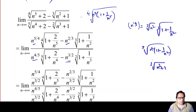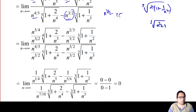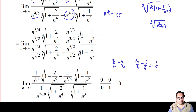Now, let us take the highest power of n in the denominator. The highest power is n^(3/2), since 3/2 = 1.5, while 4/5 is less than 1. We divide both numerator and denominator by n^(3/2). So n^(5/4) divided by n^(3/2) gives n^(5/4 - 3/2) = n^(5/4 - 6/4) = n^(-1/4), which is 1/n^(1/4).